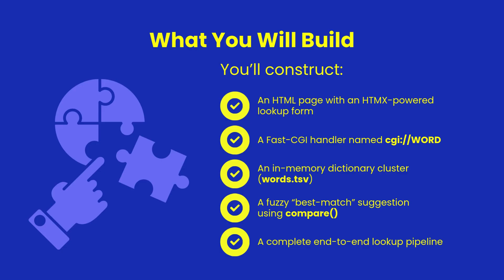In this project, we build a fully functional dictionary lookup that responds in milliseconds. You'll write an htmx form that sends a single GET request to your Shear Power FastCGI handler. The handler uses a cluster array — our high-performance, in-RAM data structure — to hold thousands of words and definitions in memory. If an exact match isn't found, we score every candidate using Shear Power's compare function to produce an intelligent best guess.